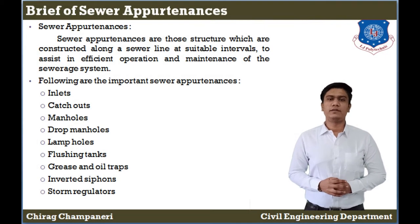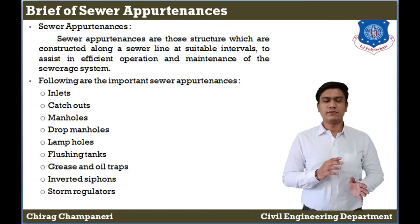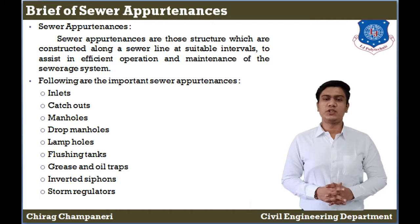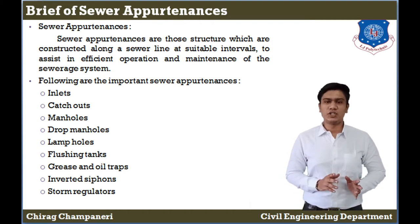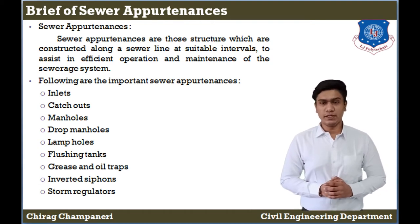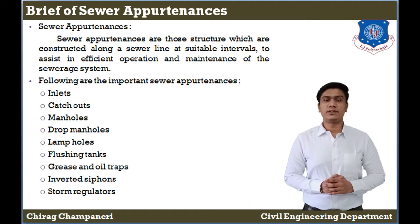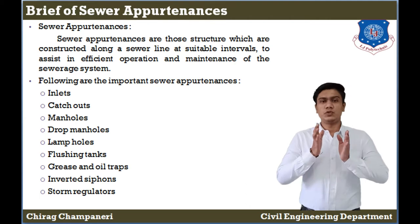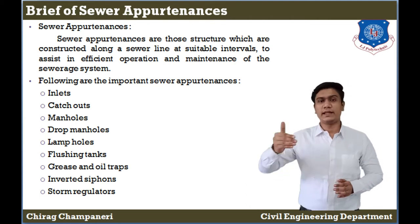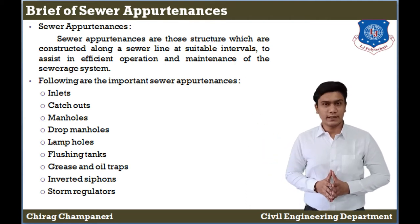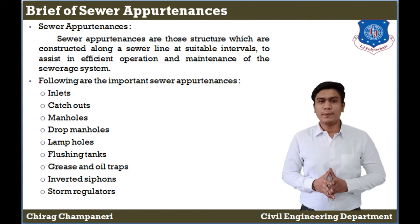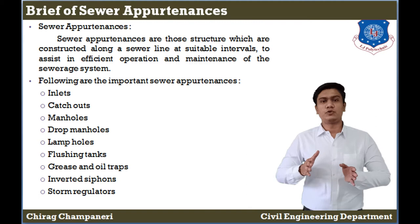Civil appurtenances are structures which are constructed along a sewer line at suitable intervals to assist in efficient operation and maintenance of a sewer system. That is, they are applied at particular intervals along the sewer line so that the system is properly maintained.